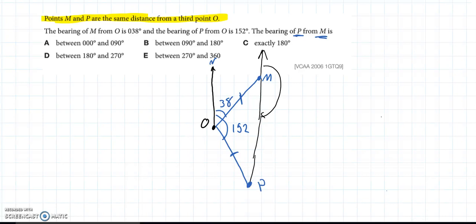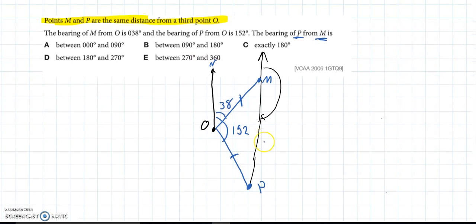Now, we all know that our diagrams are not going to be very accurate. So, this could possibly be exactly 180 degrees. And in the exam, many people circled that because it did look like one was due south of the other. But let's have a little bit of a think about this.